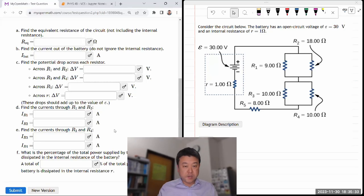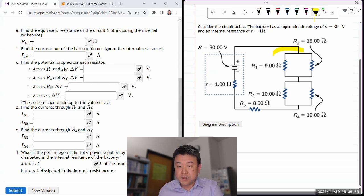So, okay, let's do this question. This is a relatively simple circuit analysis question. I say simple in the sense that you don't actually have to use Kirchhoff's rules, junction rule and loop rule to solve this circuit. All you have to do is simplify the circuit. In fact, that's question A. It says find the equivalent resistance of the circuit, not including the internal resistance.